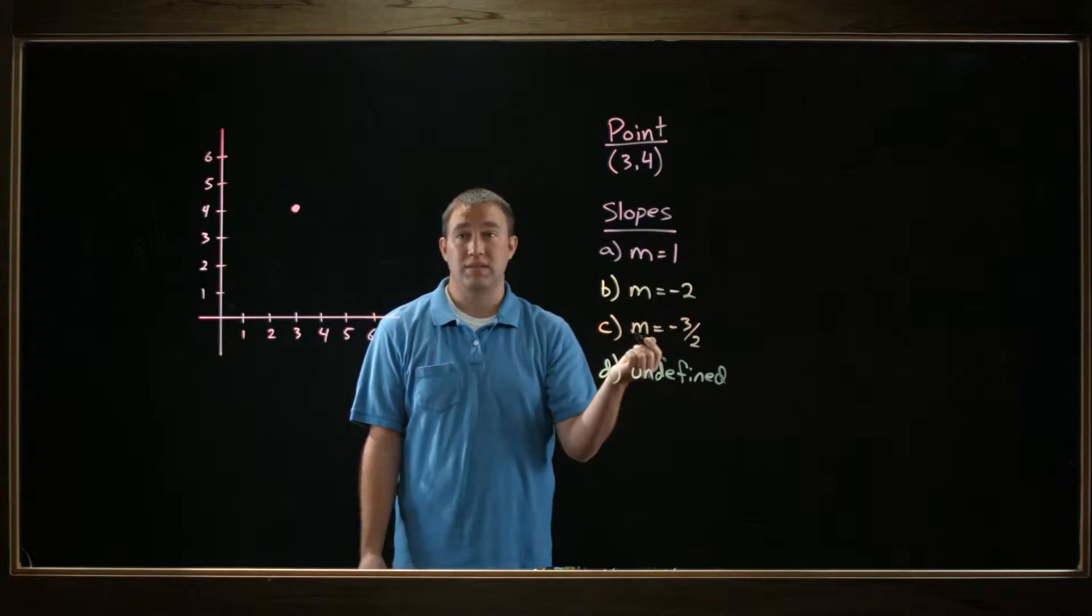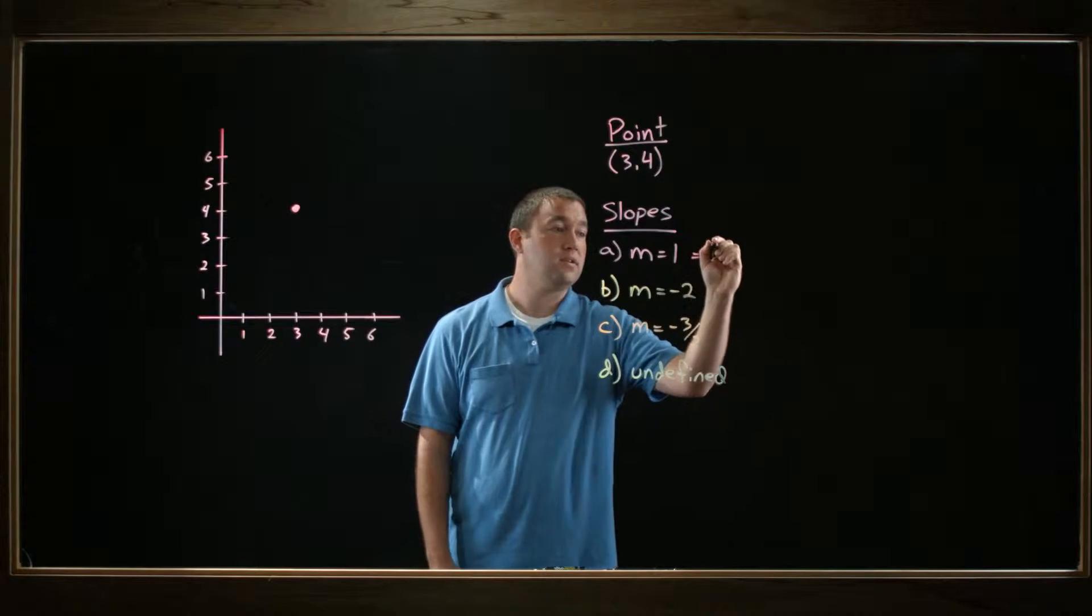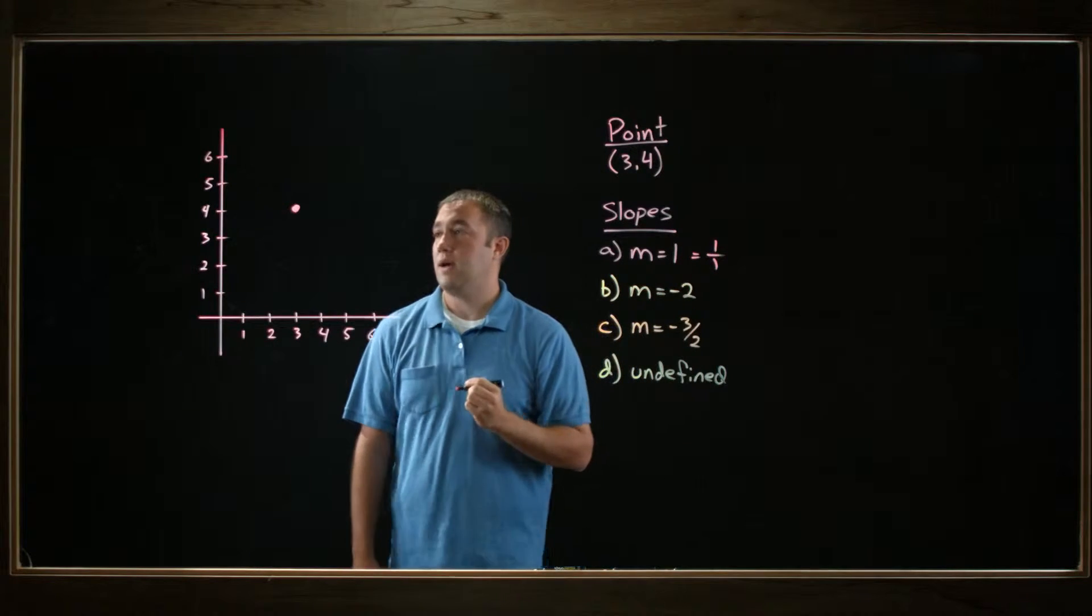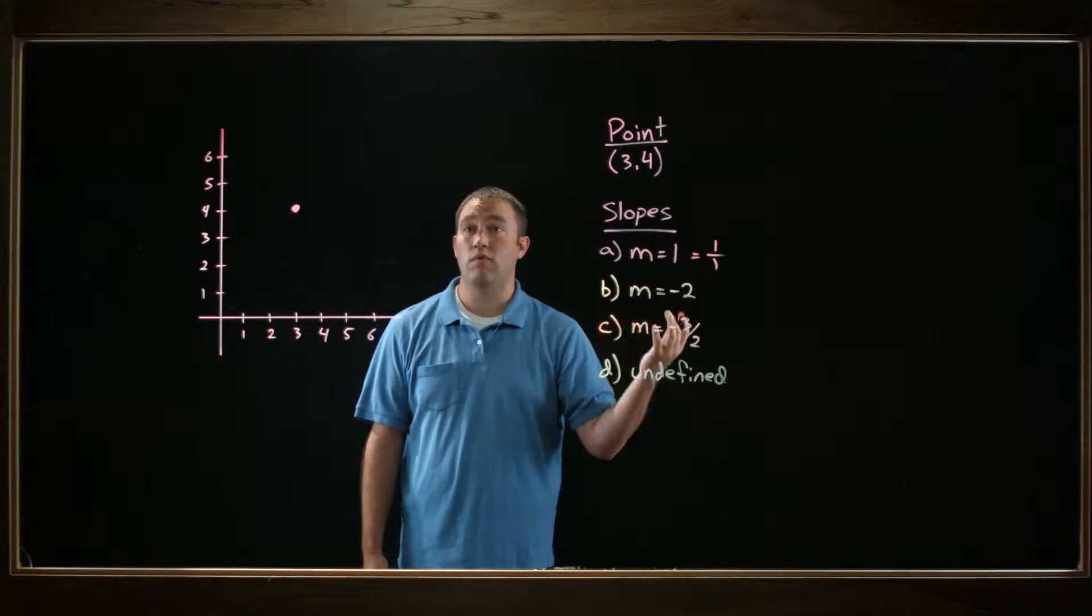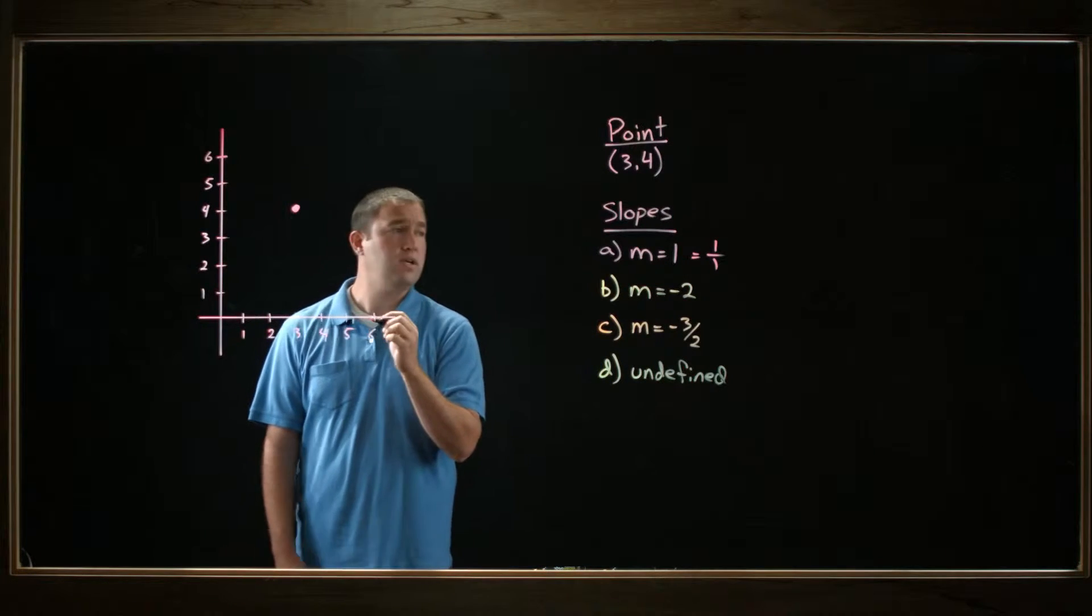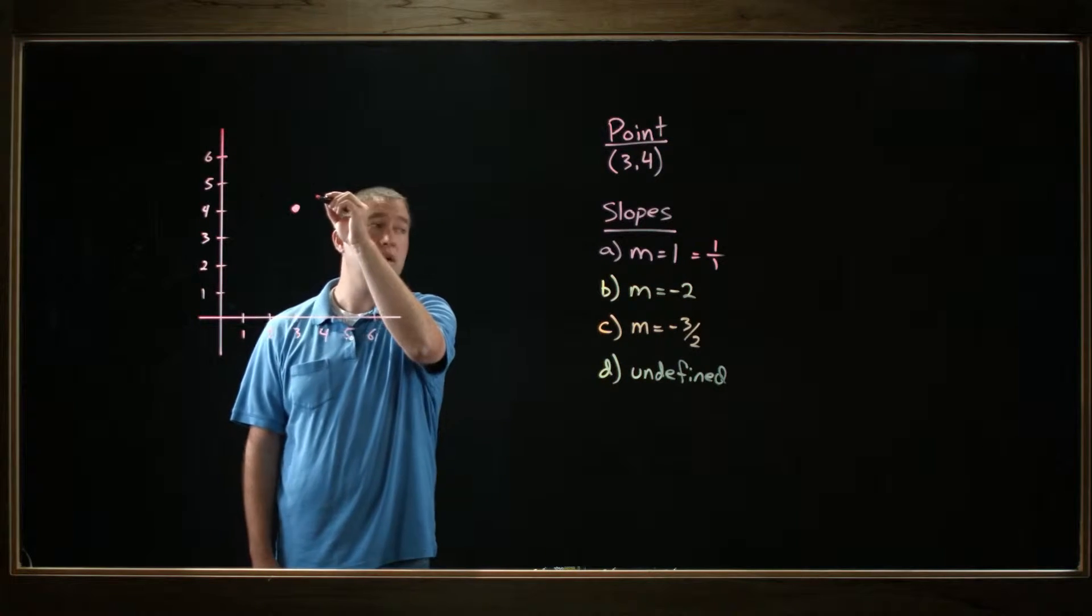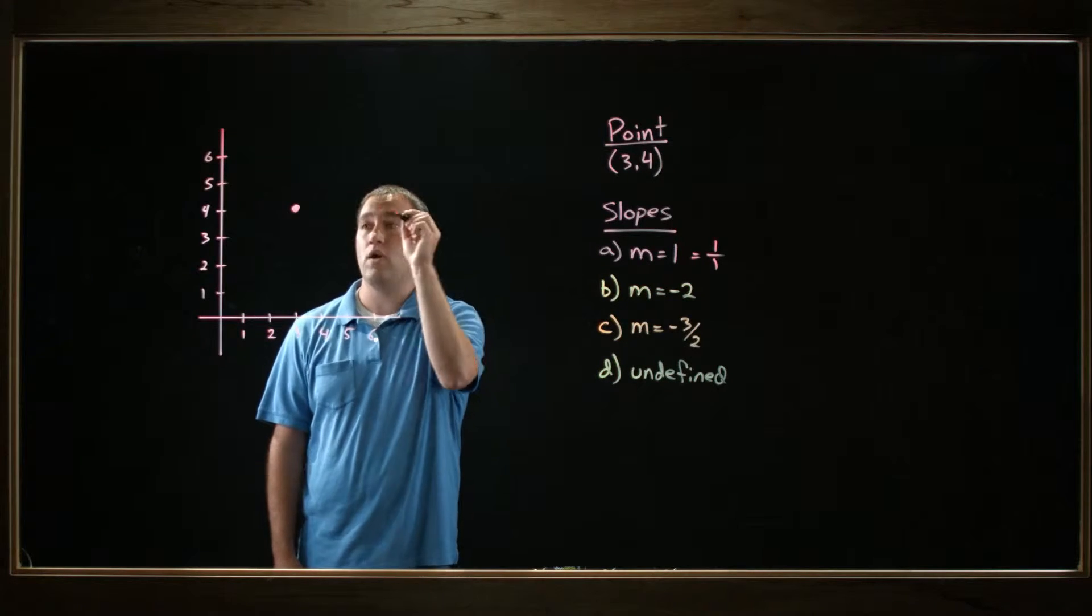Now if it's an integer like 1, it's not too bad. You can write 1 as 1 over 1. I can always write an integer as itself over 1. So I'll draw another point that's rising 1 and running 1, up 1 and over 1.